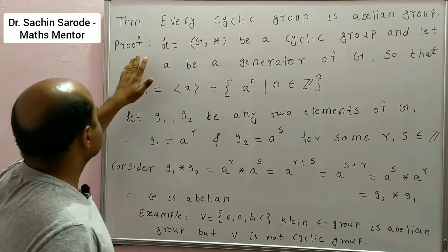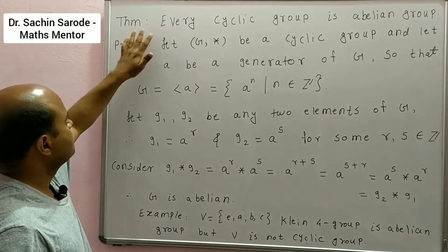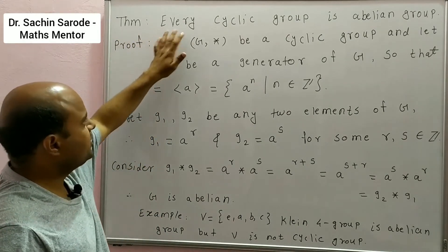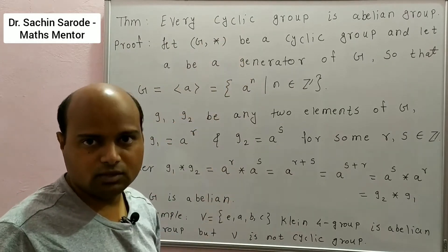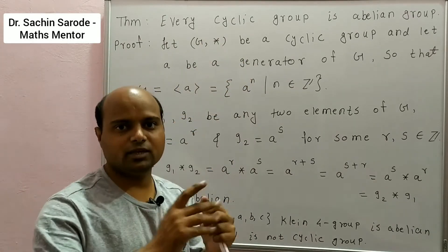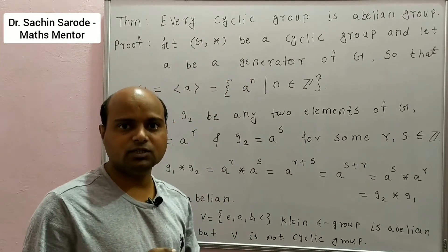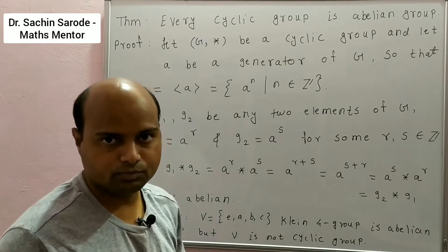We learn this result. First, the theorem: every cyclic group is an abelian group. If you have taken any cyclic group, then it is an abelian group.